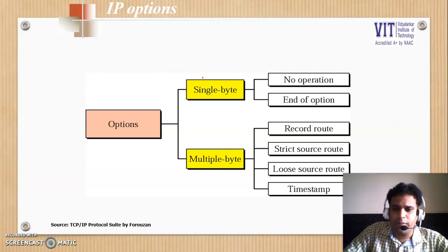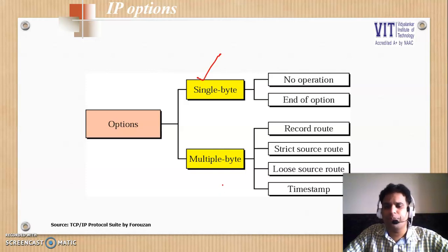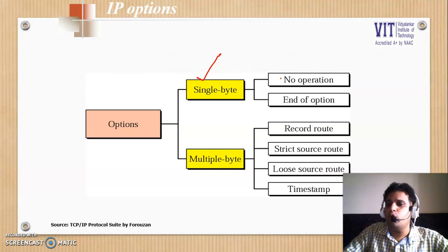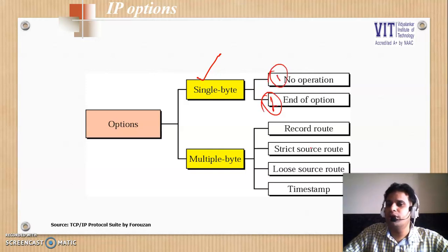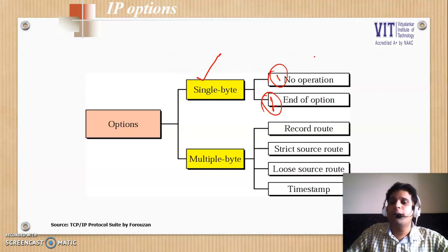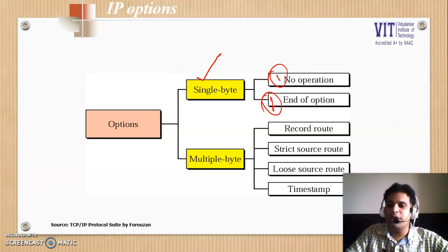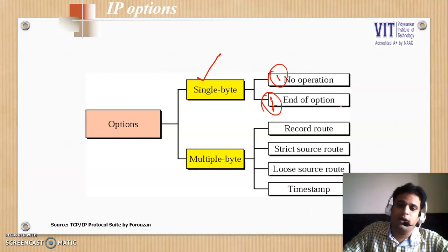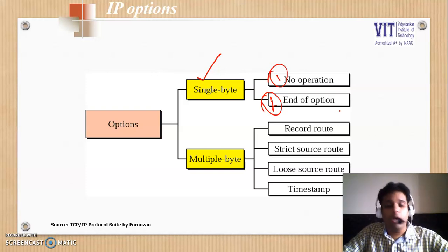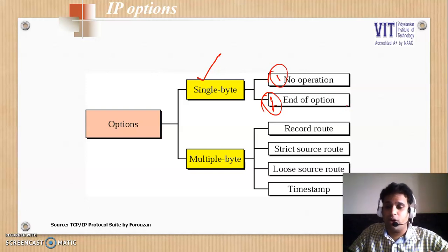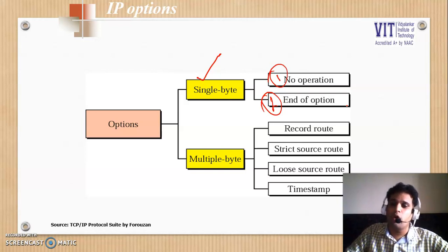The first option we will be talking about is a single byte option. In single byte options, you have two choices: the first known as No Operation, and the second known as End of Option. No Operation is used for padding and alignment purposes. End of Option is used to intimate the user that the options have ended, and whatever you read after this would be your data.